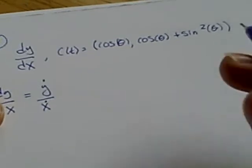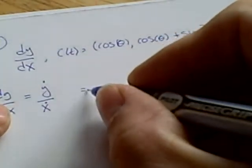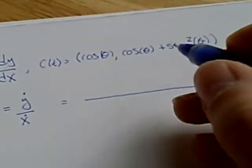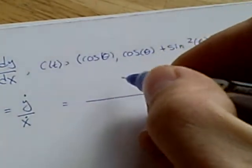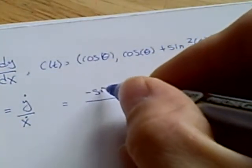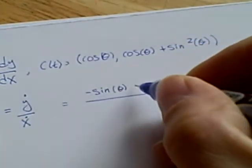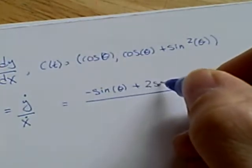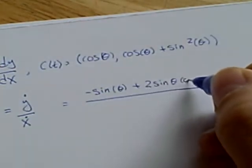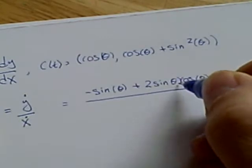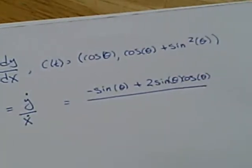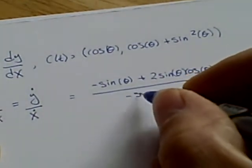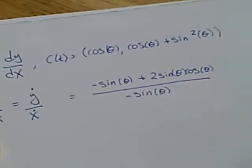But it's not hard to do. Let's first compute y prime. So y prime would be minus sin θ plus 2 sin θ cos θ. So the top and the bottom would just be minus sin θ.